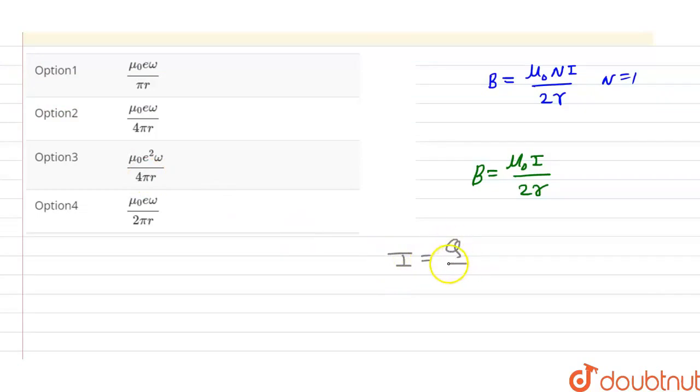So here we can see current I is equal to charge. Now we have electron, and the value of charge is 1.6 multiplied by 10 to the minus 19, divided by T.